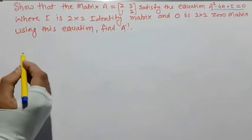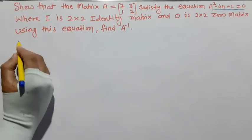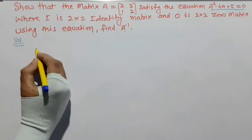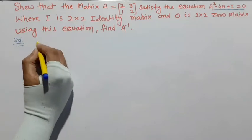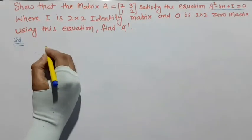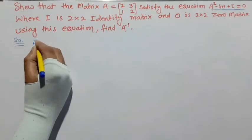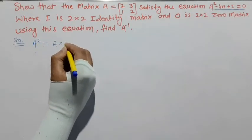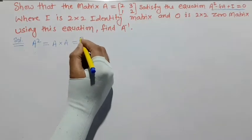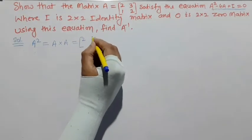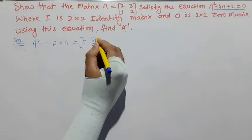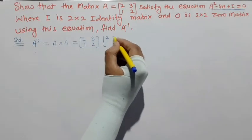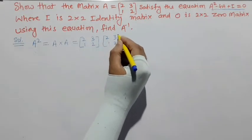For the solution, A² is equal to A into A, which is [[2,3],[1,2]] multiplied by [[2,3],[1,2]].